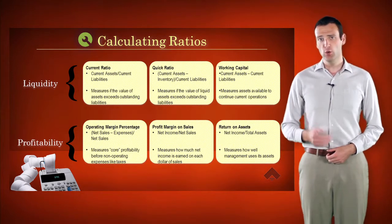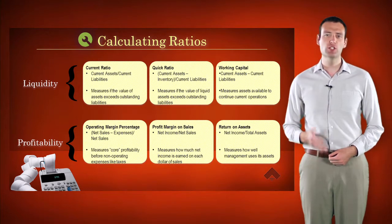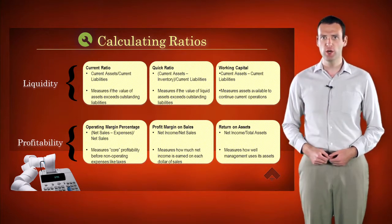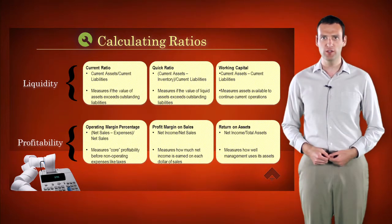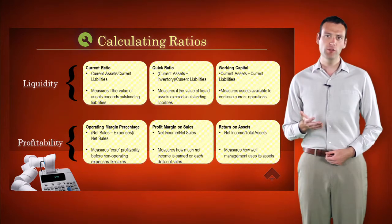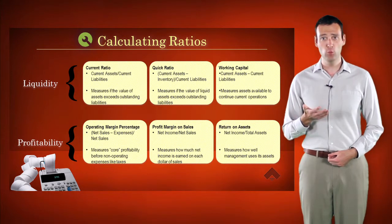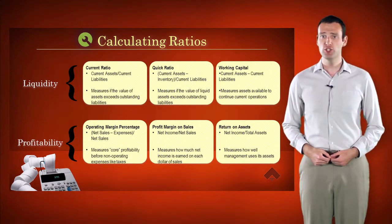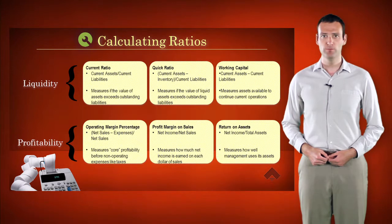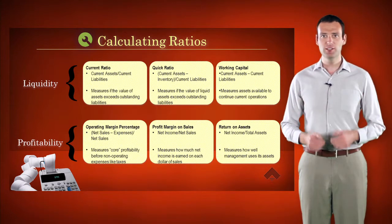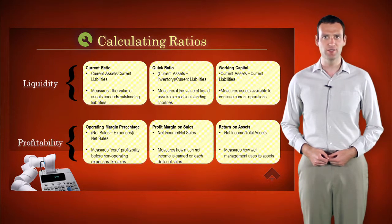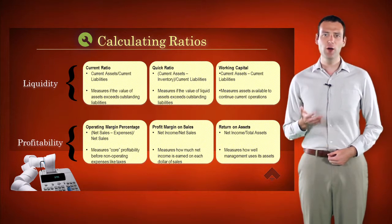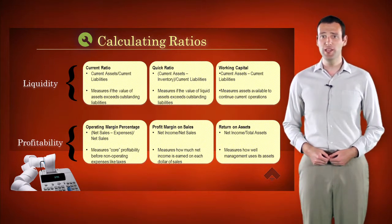The quick ratio, or acid test ratio, is a stricter version of the current ratio and takes into account only cash and near-cash in relation to current liabilities. Since we want the current ratio to be higher than one, we would expect the quick ratio to be even higher. Working capital is calculated by subtracting current liabilities from current assets. In a healthy company, this number should always be positive.